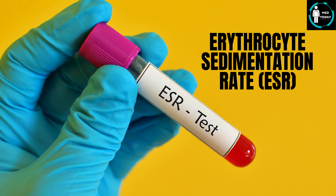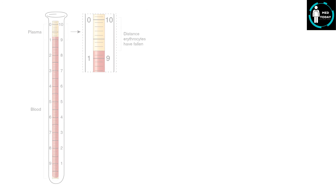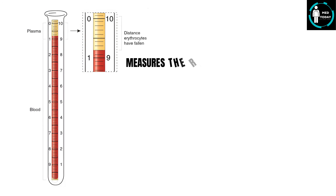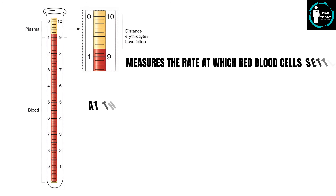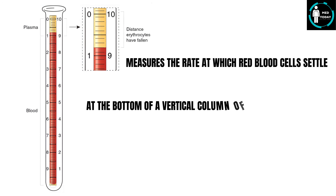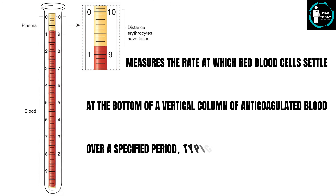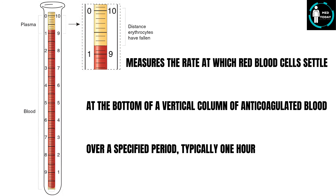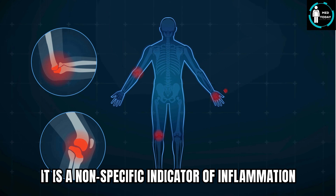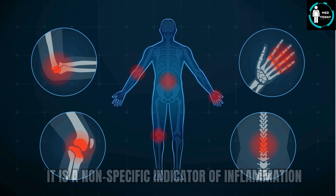The erythrocyte sedimentation rate, or ESR for short, is a laboratory test that measures the rate at which red blood cells settle at the bottom of a vertical column of anticoagulated blood over a specified period, typically one hour. It is a nonspecific indicator of inflammation.